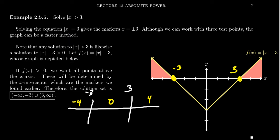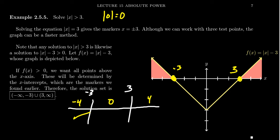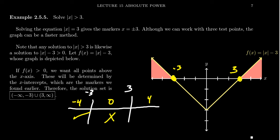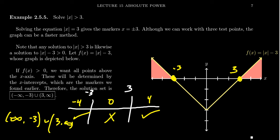We plug these back into the original inequality. The absolute value of negative 4 is 4 — is that greater than 3? Yes, so we put a check mark. The absolute value of zero is zero — is that greater than 3? No, so we put an X. The absolute value of 4 is 4, which is greater than 3, so that passes. This tells us we want numbers less than negative 3 and greater than 3, giving us the interval negative infinity to negative 3, union 3 to infinity. Since it's a strict inequality, we use parentheses.